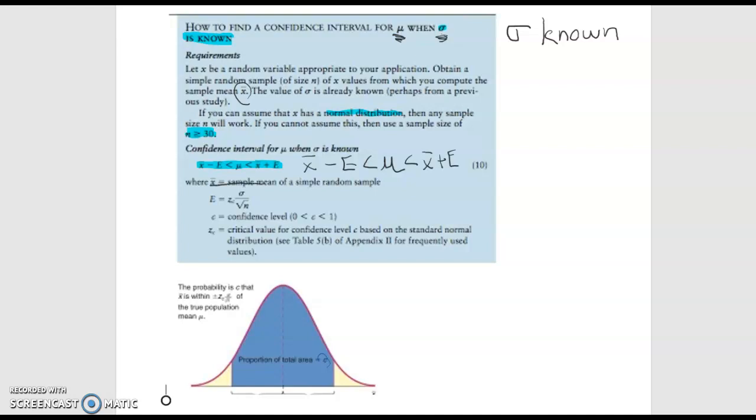And here we have a formula for finding that error. You're going to see in the formula that it says Z sub C so Z critical. That's your critical value and we've also learned that to be stated as Z sub alpha over two. Those are the same thing and we call them the critical value.